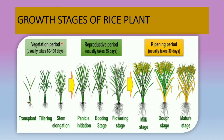Coming to the growth stages: first we have the vegetative period, reproductive period, and ripening period. The vegetative period takes 60 to 100 days; the reproductive period usually takes 35 days; and the ripening period takes 30 days. The vegetative period has three stages: transplanting, tillering, and stem elongation. The reproductive period includes panicle initiation, booting stage, and flowering stage.